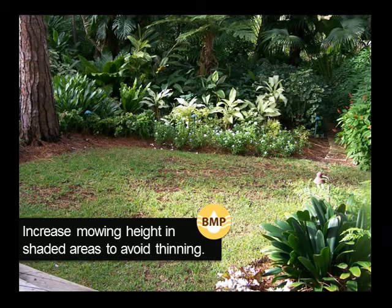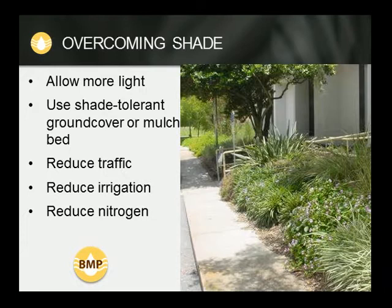Shade BMP: Increase mowing height in shaded areas to avoid thinning. To produce better turfgrass growth in shaded situations, increase the mowing height — this allows for more leaf area to intercept as much available light as possible. In addition, leaf blades are longer and narrower in the shade, and a lower cutting height excessively reduces leaf length, which is not good for the grass. Increased mowing height also promotes deeper rooting, which is one of the key mechanisms for stress tolerance for turfgrass. In many landscape settings, the turfgrass receives a minimum amount of light for enough of the day to maintain adequate growth, even if an area is shaded for other portions of the day.